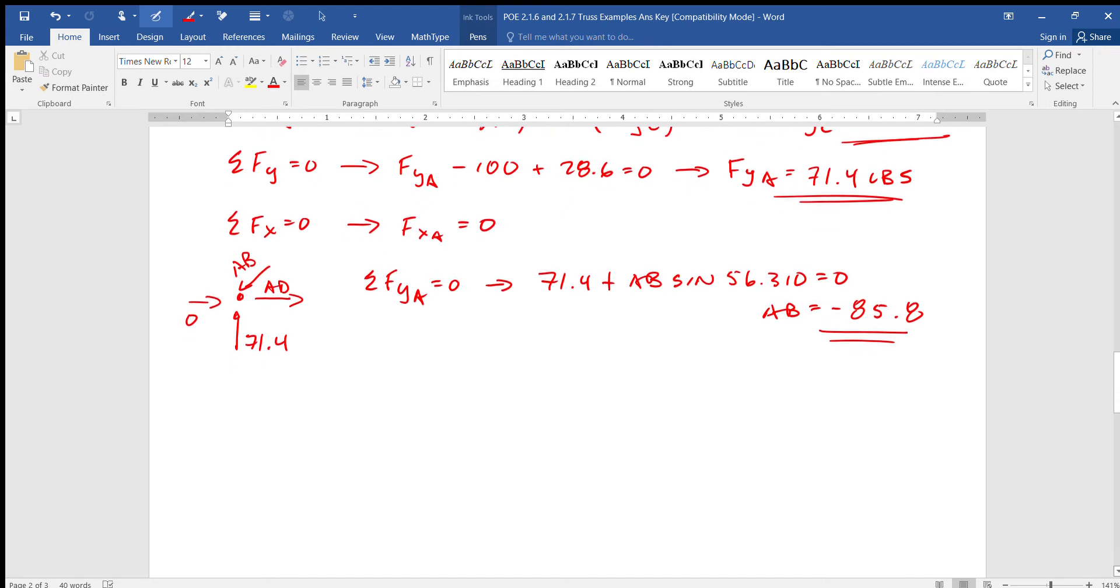And this is 85.8 and it's in compression. It's pushing on the joint, so it's compressed due to that force at the joints. Now we can find out AD because all the sum of the forces of X at A equals zero.